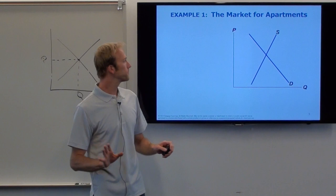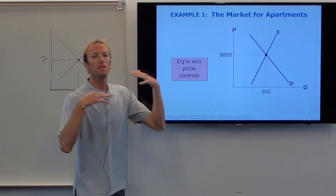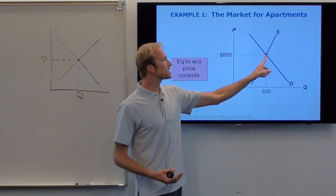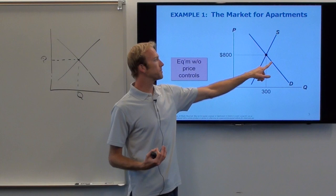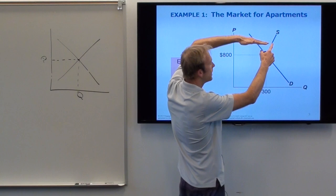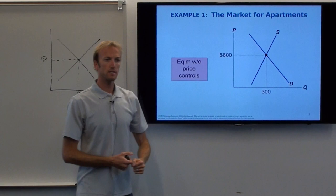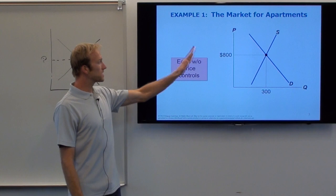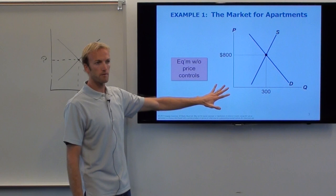Here is the market. We're going to put price and quantity down and do the original outcome with no government intrusion first. On the Y-axis we always put P — the price of apartments, since this is the market for apartments. On the X-axis is the quantity of apartments. There is the demand for apartments and the supply of apartments. Equilibrium without price control: this is the equilibrium in the world with no government. We found $800 and 300 because it was the only place where demand and supply were the same quantity.